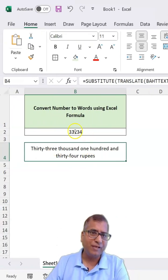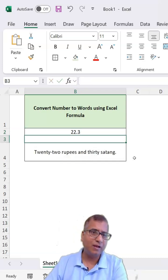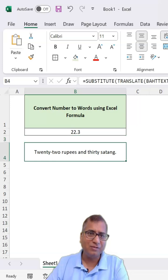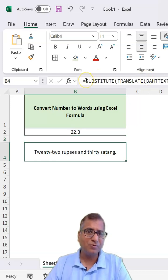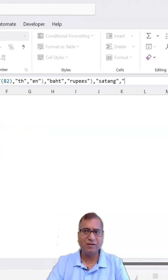So it is fixed. If I put something in decimals, then we need to fix the other one as well. Right, so one more SUBSTITUTE, substitute, then replace it with paisa.